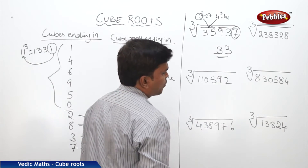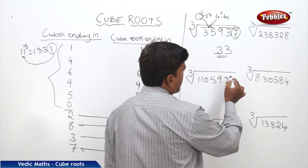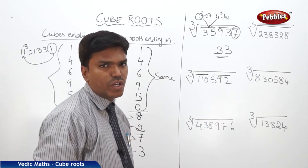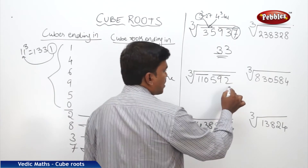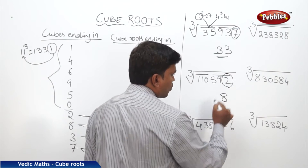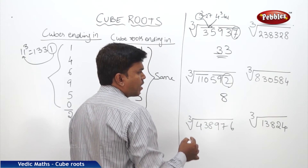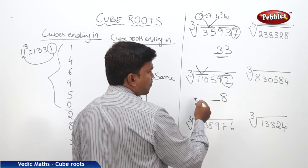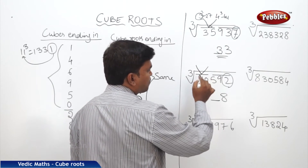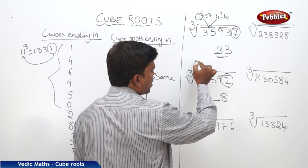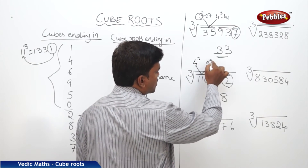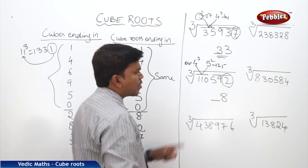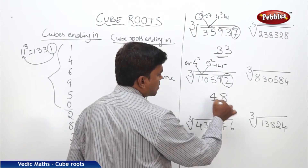Now one more example. Make the partition into 3-digit groups. The cube number is ending in 2, so the cube root should end in 8. Now the second partition number is 110. The number 110 comes between 4 cubed (64) and 5 cubed (125). We always take the lesser number, which is 4. So the answer is 48.